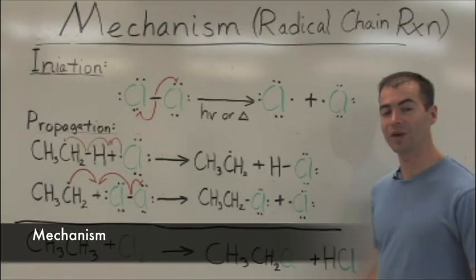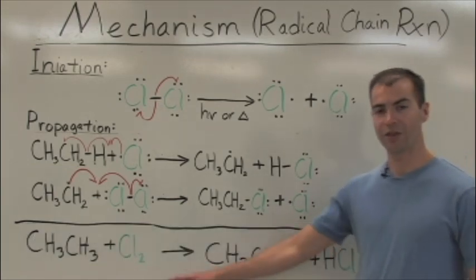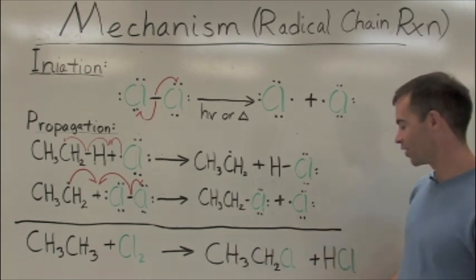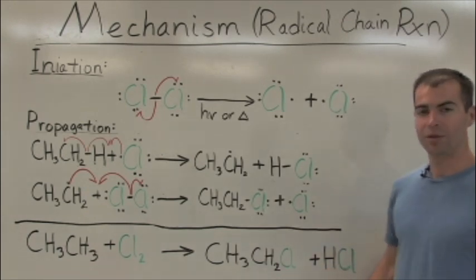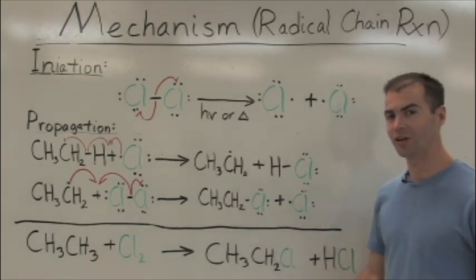This mechanism is the halogenation of alkanes. In this case, ethane reacts with chlorine to yield ethyl chloride and hydrogen chloride. The mechanism involves three stages: initiation, propagation, and termination.